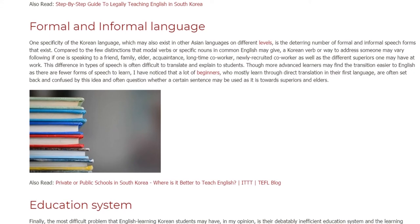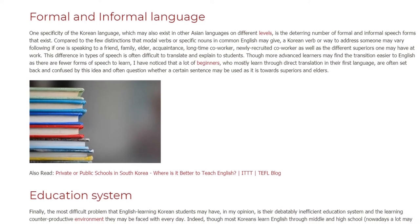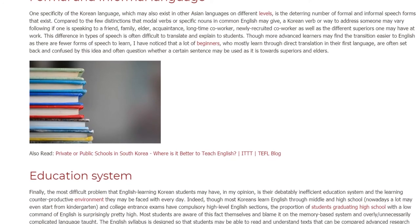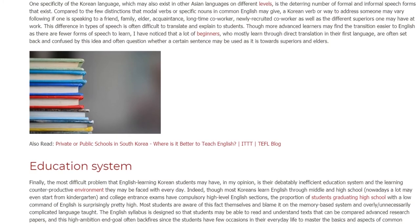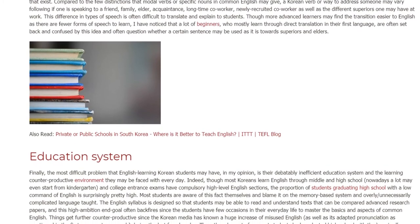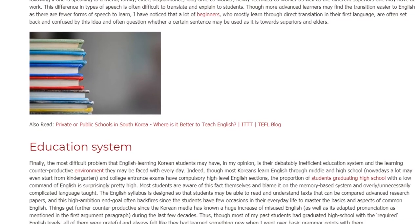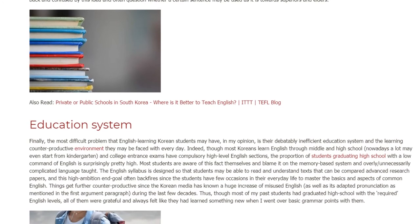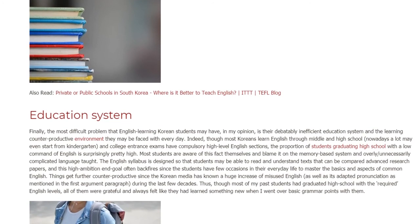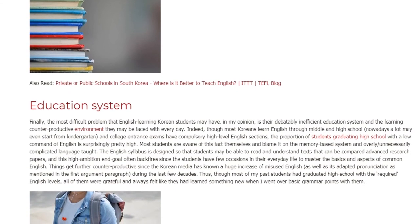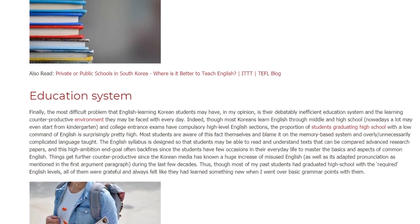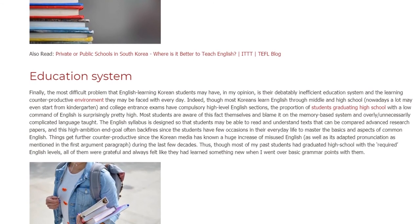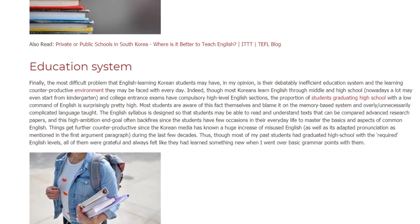Education System. Finally, the most difficult problem that English-learning Korean students may have, in my opinion, is their debatably inefficient education system and the learning counterproductive environment they may be faced with every day. Indeed, though most Koreans learn English through middle and high school — and nowadays a lot may even start from kindergarten — college entrance exams have compulsory high-level English sections. The proportion of students graduating high school with a low command of English is surprisingly pretty high. Most students are aware of this fact themselves and blame it on the memory-based system and overly, unnecessarily complicated language taught. The English syllabus is designed so that students may be able to read and understand texts comparable to advanced research papers.